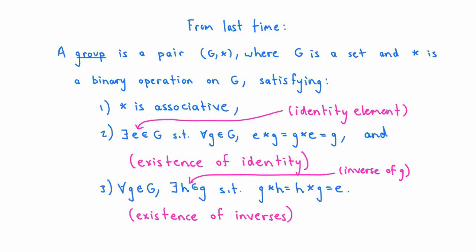I'd like to start by reminding you about the definition of a group from last time. A group is a pair consisting of a set together with a binary operation which satisfies three properties. Number one, the binary operation is associative. Number two, there's an element in G called the identity element with the property that for any g in G, when you combine the identity element from the left or from the right with g using your binary operation, you don't change g.